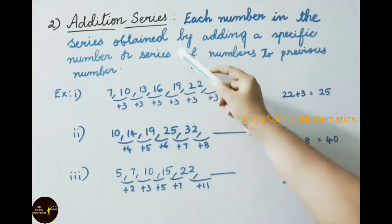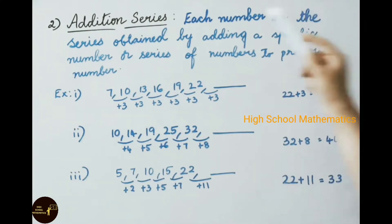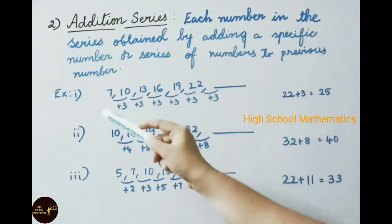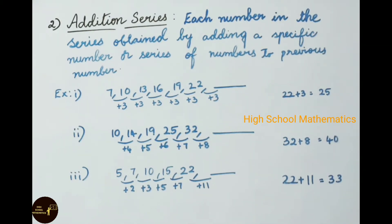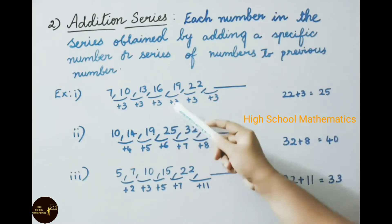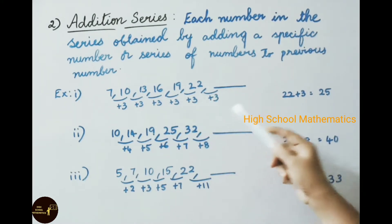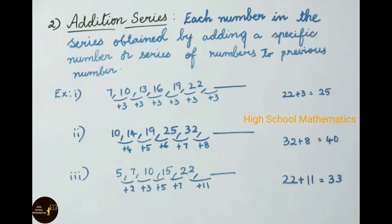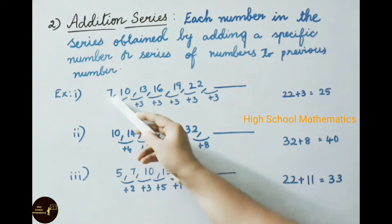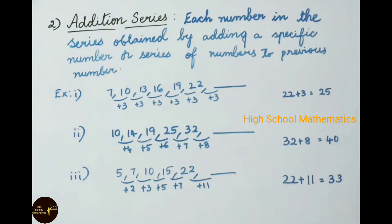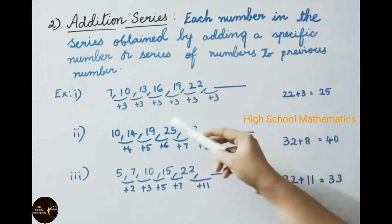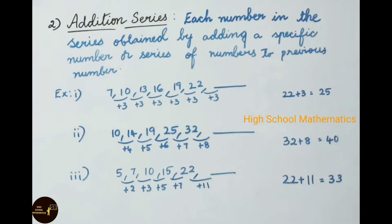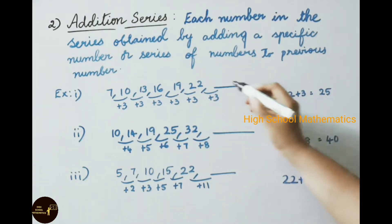Now the second type: the addition series. Each number in the series is obtained by adding a specific number or series of numbers to the previous number. For example: 7, 10, 13, 16, 19, 22 — find the next number. Observing this series: 7 plus 3 gives 10, 10 plus 3 gives 13, 13 plus 3 is 16, 16 plus 3 is 19, 19 plus 3 is 22. So the next number is 22 plus 3, which is 25.